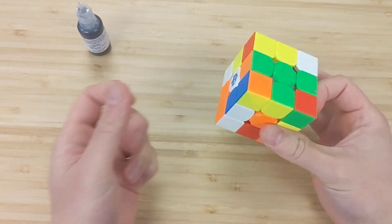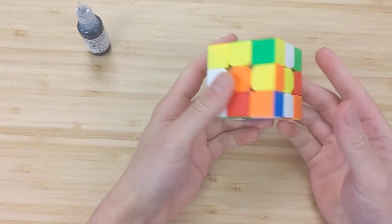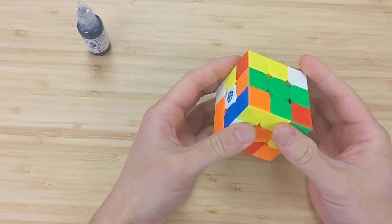Alright, and at this point, I would say the cube is fairly thoroughly lubed. If you want to add more, you can.